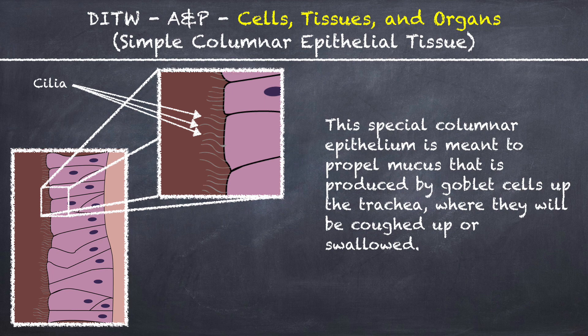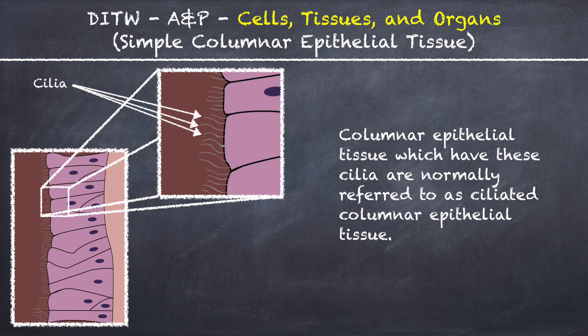This special columnar epithelial tissue is meant to propel mucus that is produced by goblet cells up the trachea, where it will be coughed up or swallowed. Columnar epithelial tissue which have these cilia are normally referred to as ciliated columnar epithelial tissue.